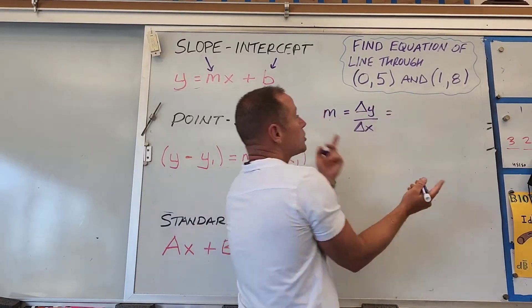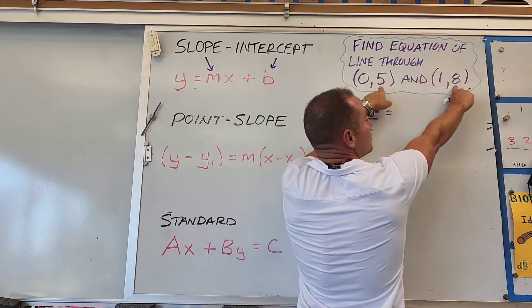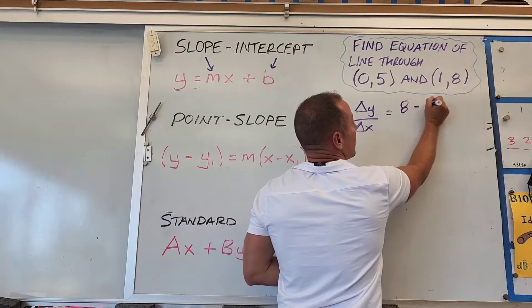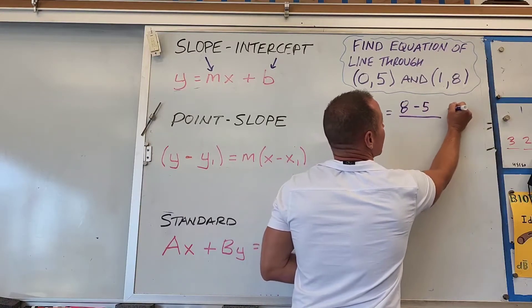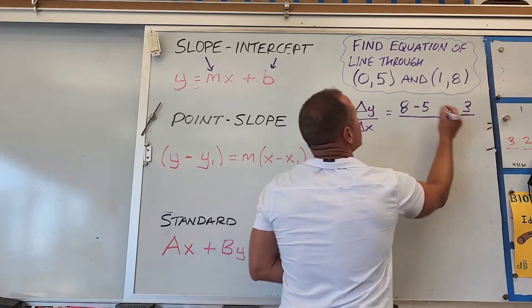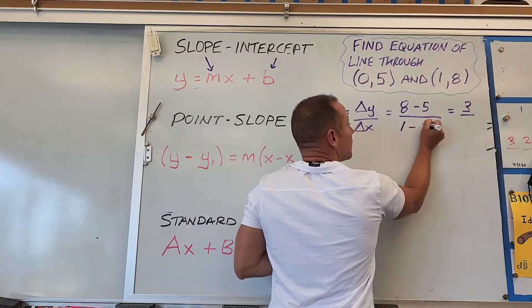Looking at the change in y-coordinate, we've gone from 5 to 8, so we've gone up by 3. You could say 8 minus 5 is the change in y-coordinate, which equals 3.